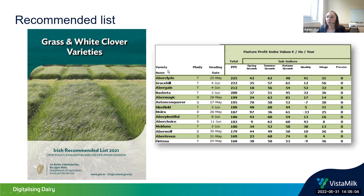The recommended list gives you a variety name as well as information on spring growth, summer growth, autumn growth, quality, silage, and persistence for each variety. It also gives you a pasture profit index value for the variety, and they are ranked from the best to the poorest.